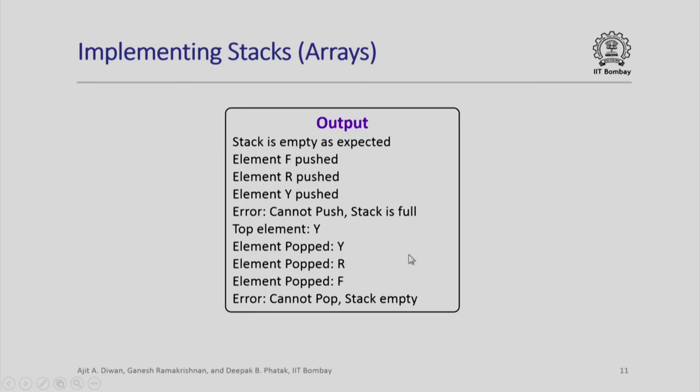So notice that the stack implementation using an array is an extremely simple thing, and the functions we have written can be used anywhere, anytime. If you want the element type to be different, simply use a different type instead of char and you will get a stack of any particular type that you want. Note that the function definition itself will not change except for the parameter type that you will push or pop. Next time we will look at the implementation of stack using linked list. Thank you.